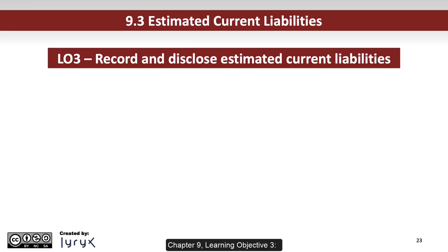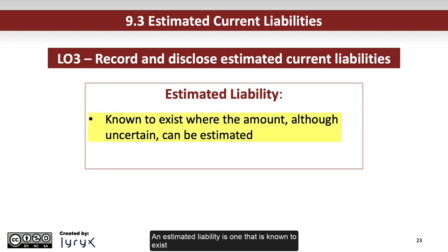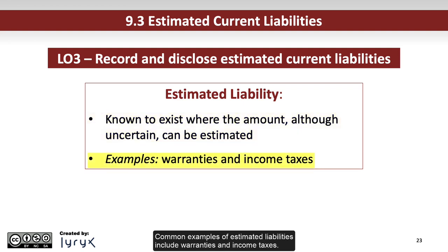Chapter 9 Learning Objective 3: Record and Disclose Estimated Current Liabilities. An estimated liability is one that is known to exist, but where the amount, which is uncertain, can be estimated. Common examples of estimated liabilities include warranties and income taxes.